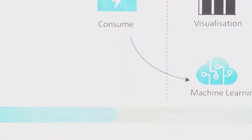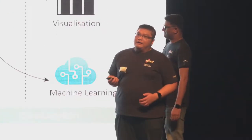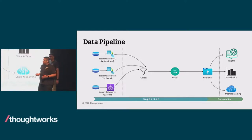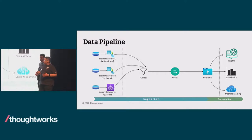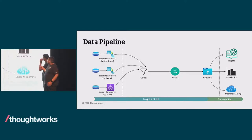Let me give a quick introduction of what a pipeline is. A pipeline can be referred to as transferring an item from start to end. Similarly, a data pipeline is moving data from different data sources to the consumption layer. From the consumption layer, this data can be used for things like deriving insights, creating visualizations, or machine learning.